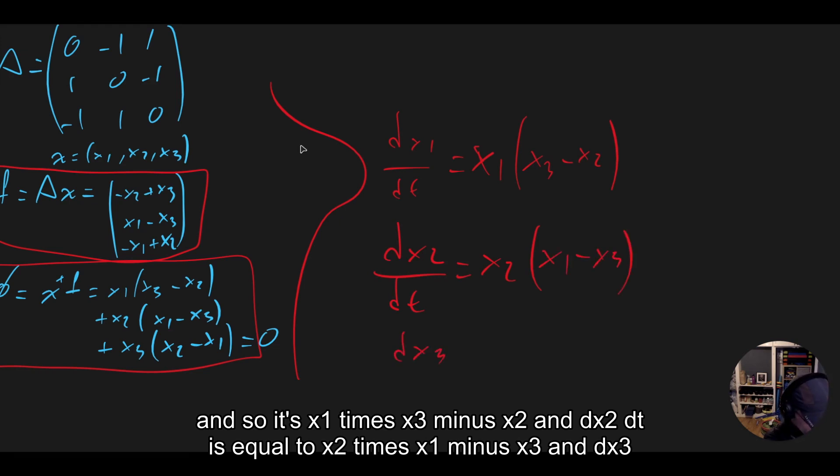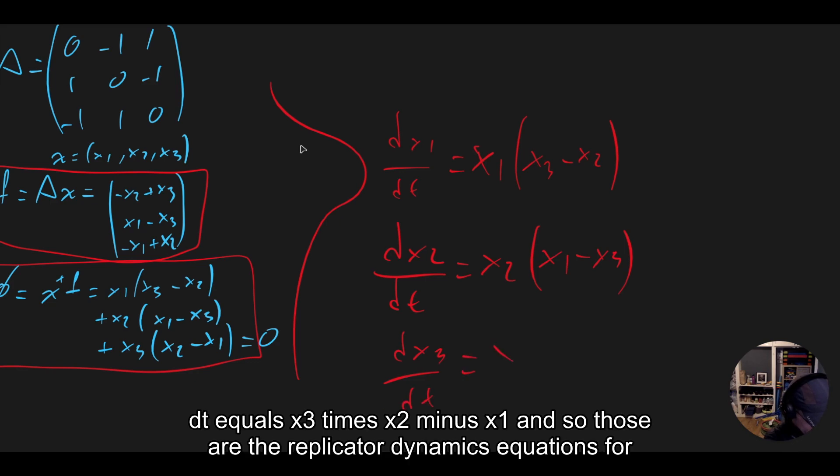And dx2/dt is equal to x2 times (x1 - x3). And dx3/dt equals x3 times (x2 - x1).